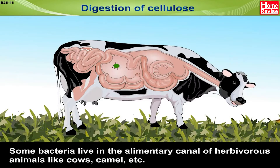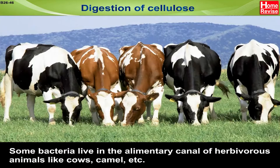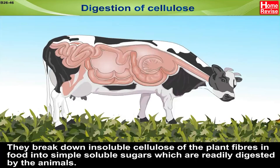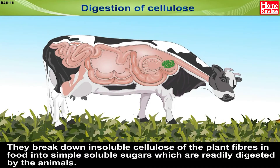Digestion of Cellulose: Some bacteria live in the alimentary canal of herbivorous animals like cows, camel, etc. They break down insoluble cellulose of the plant fibers in food into simple soluble sugars which are readily digested by the animals.